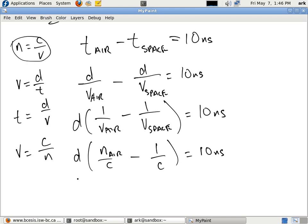We can also factor out c now because that's a common value as well. So, that's just d over c multiplied by, now let's actually put the values in. What's the n for air? 1.0003 minus a 1, and that's going to equal 10 times 10 to the power of negative 9 seconds, which is 10 nanoseconds.